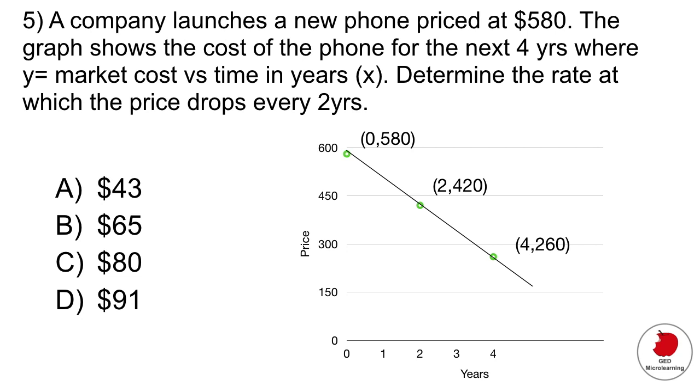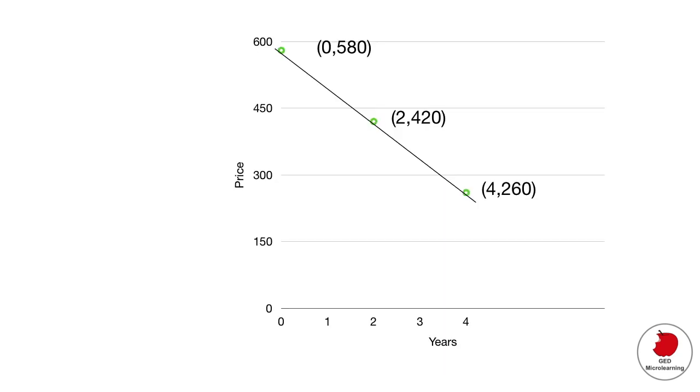A company launches a new phone priced at 580 dollars. The graph shows the cost of the phone over the next four years where y represents the market cost versus x which represents the time in years. Determine the rate at which the price drops every two years. All right so before we kind of tackle the question again let's read our graph. So we don't have a title here but we have the y-axis telling us that's the price and then the x-axis is telling us the years. And if you look on the line we have three points and these points are coordinates. So the first number is going to be your x and your second number is going to be the y.